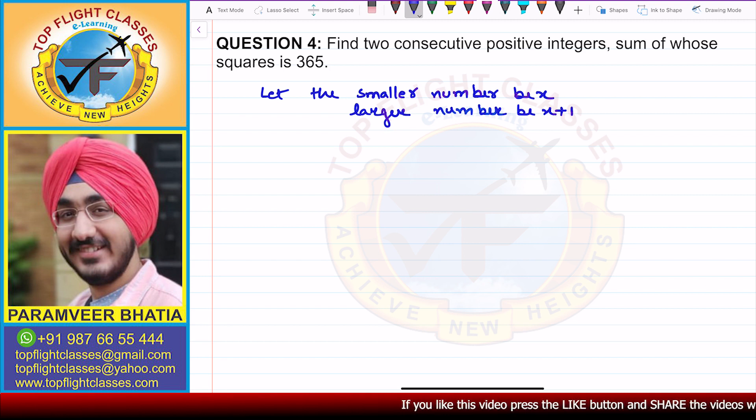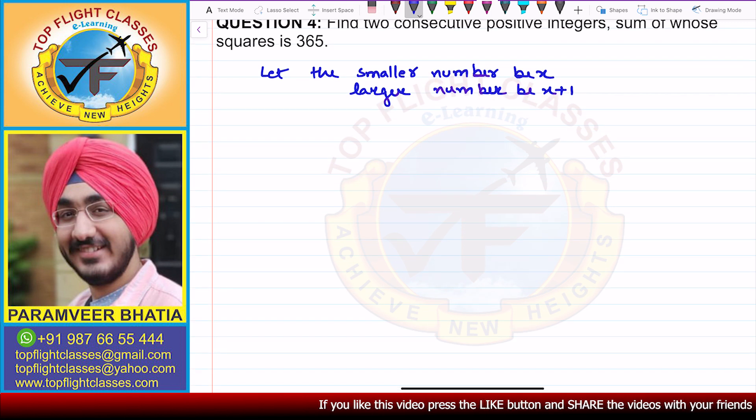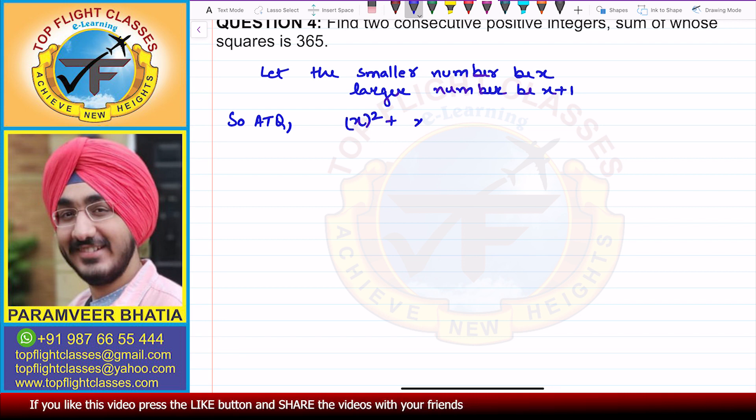Now, sum of the squares is 365. So if we look at the question, sum of the squares of these two numbers. That means x square plus x plus 1 square is equal to 365.